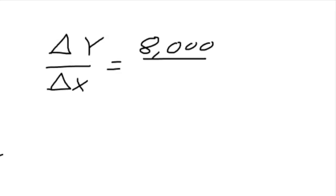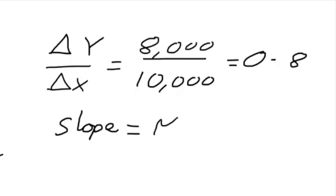And the change in X is between ten and twenty thousand, so this is ten thousand euro. Eight thousand over ten thousand euro is 0.8. So the slope of the line, our marginal propensity to consume, is what we actually call it. So the MPC, the slope of our line, is equal to 0.8.